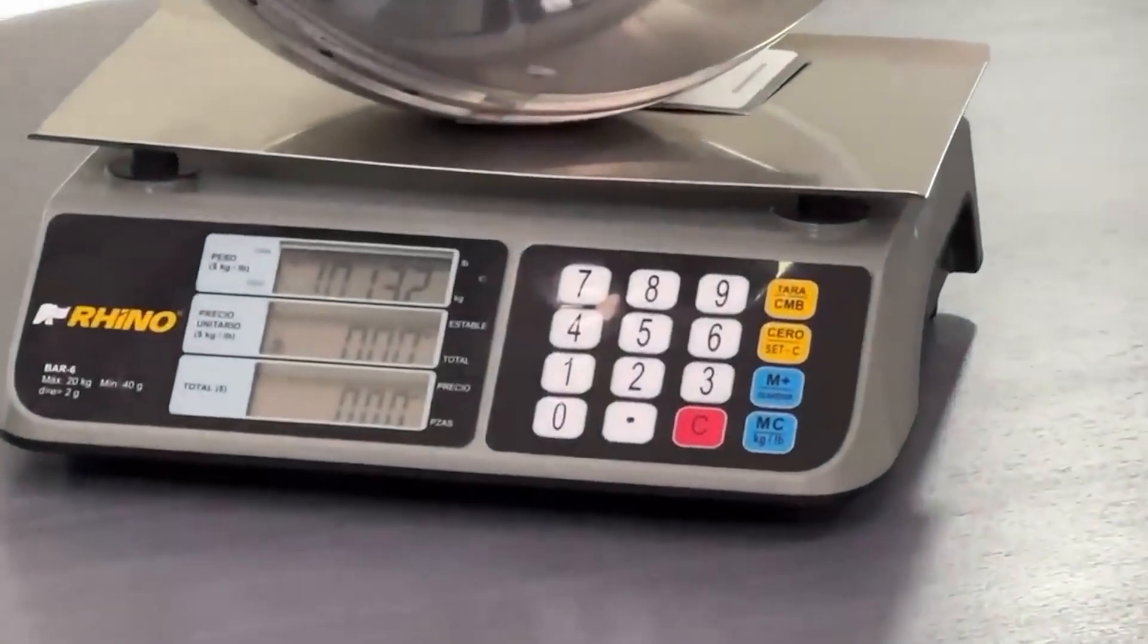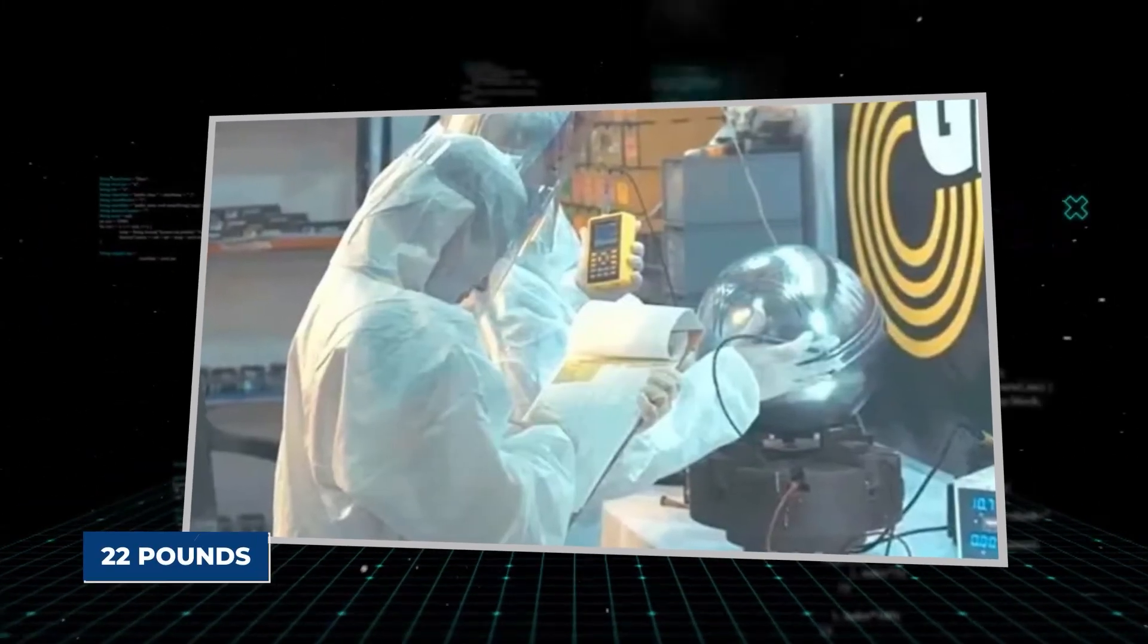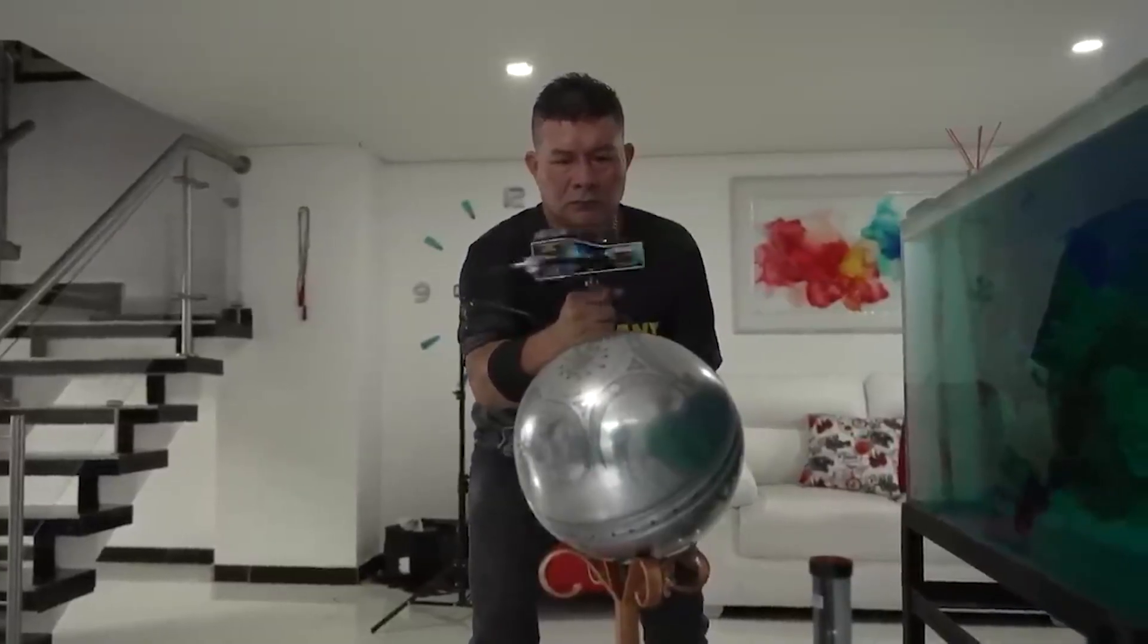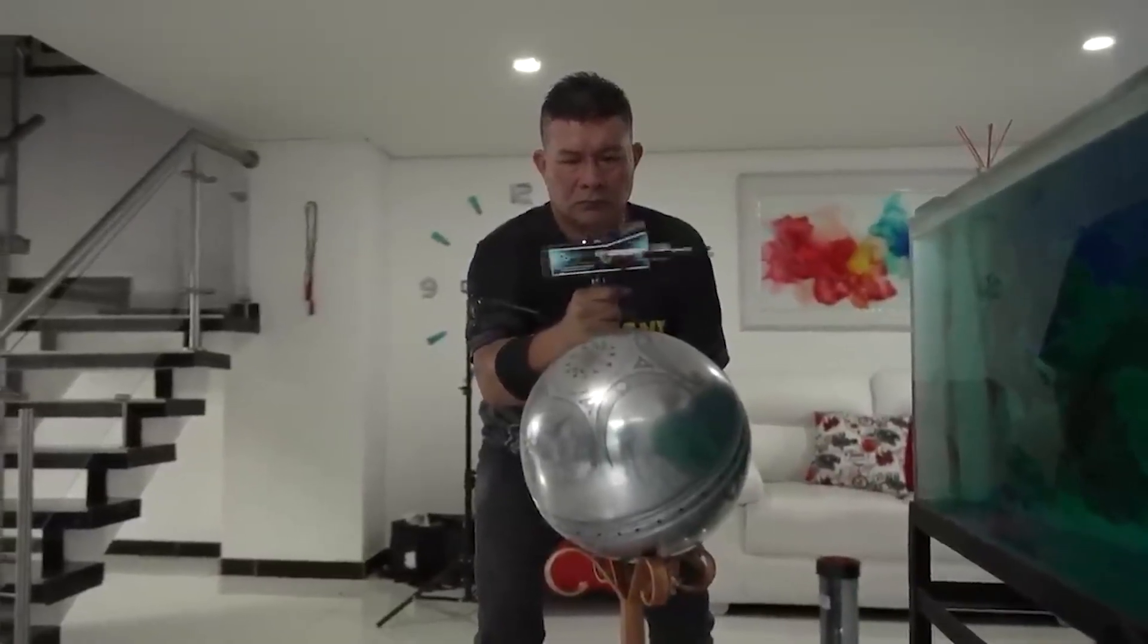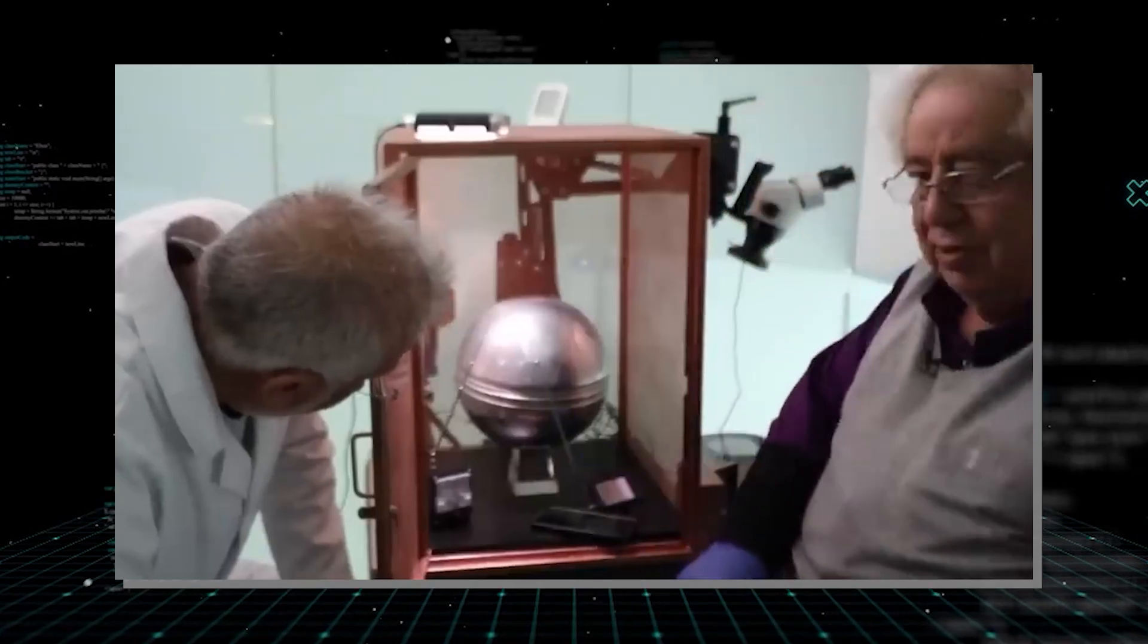On day one, it weighed 16 pounds. A week later, they measured it again on a different calibrated scale. It was 20 pounds. Two weeks later, it was 22 pounds. Mass was appearing from nowhere, violating the most fundamental laws of conservation. It was gaining weight without taking anything in.